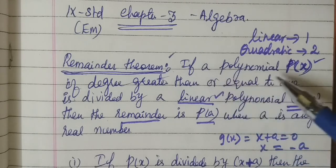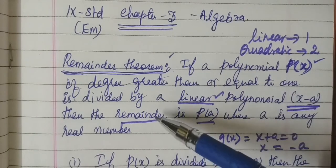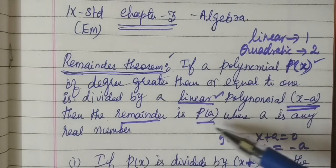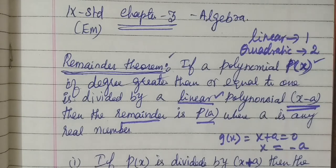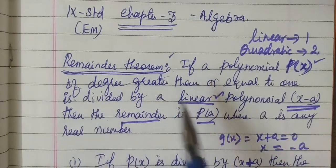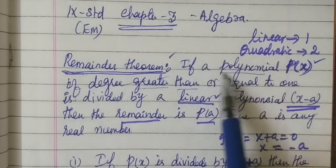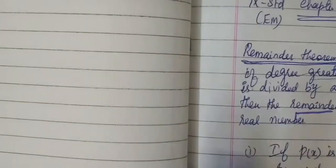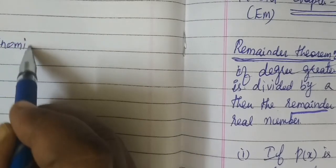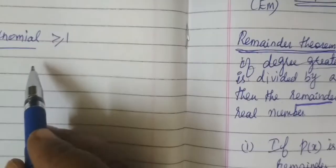Here we are given: if a polynomial p(x) of degree greater than or equal to 1 is divided by a linear polynomial x minus a, then the remainder is p(a). That is, if a polynomial p(x) of degree greater than or equal to 1 is divided by a linear polynomial x minus a, we get a remainder.